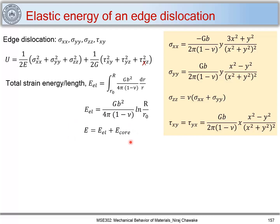Here also we are not considering the core of the dislocation, so the total energy is E_l (elastic strain energy) + E_core. From computer simulation studies, E_core is also directly proportional to b². Therefore, the total energy can be written as α·Gb², which is an important relation between the energy of a dislocation and its Burgers vector. For both screw and edge dislocations, elastic strain energy per unit length is proportional to the square of the Burgers vector.